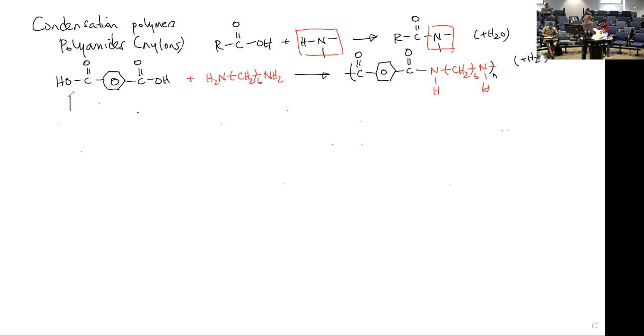I also want to talk about polyesters. Polyesters are made in the same way that esters are. We already know that if you take a carboxylic acid plus an alcohol, then you will get an ester. That was also a chapter 10 reaction. And of course, you'll also get a molecule of water.